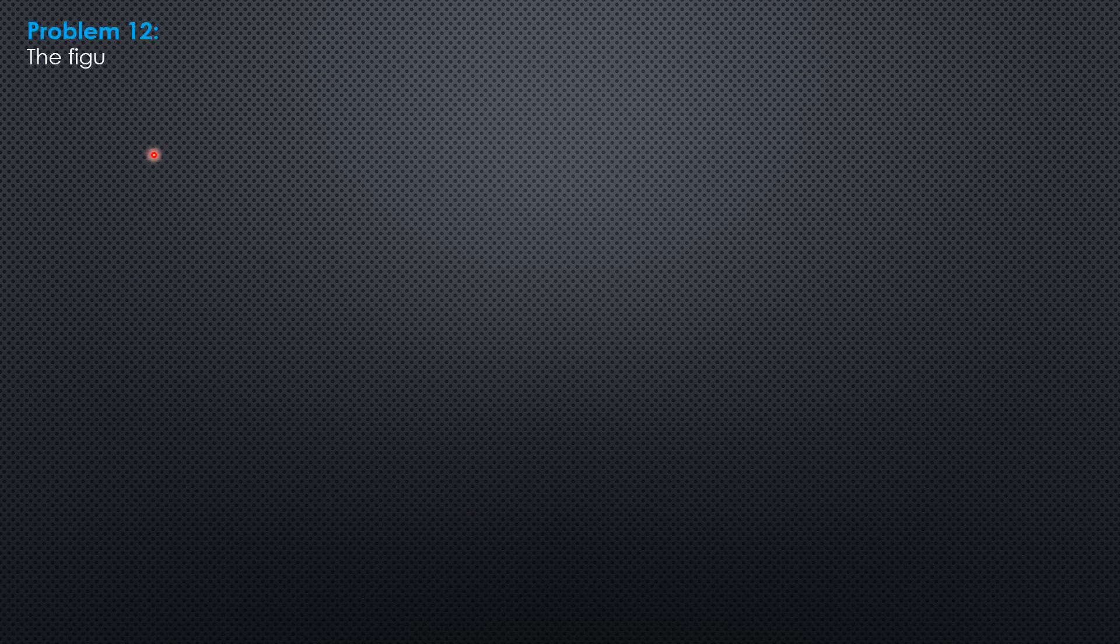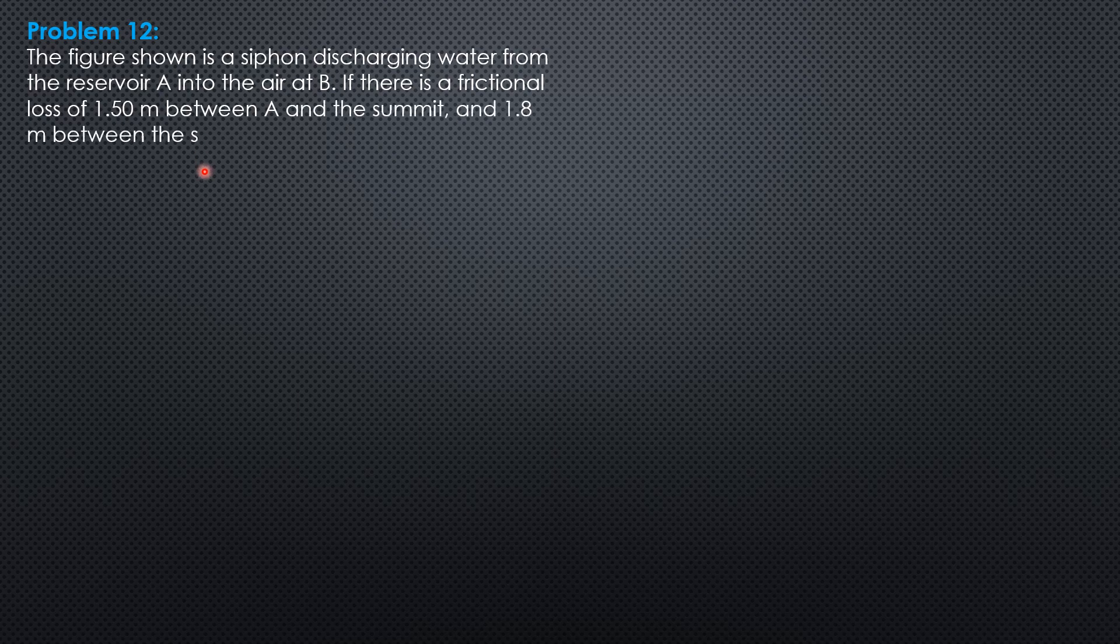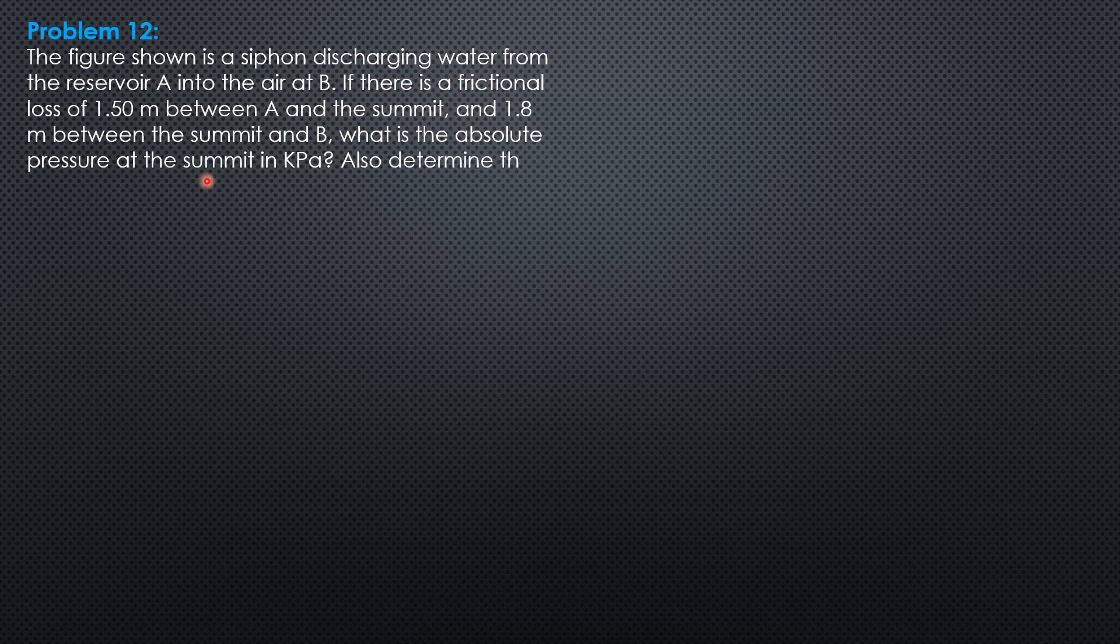Problem 12. The figure shown is a siphon discharging water from the reservoir A into the air at B. If there is a frictional loss of 1.5 meters between A and the summit and 1.8 meters between the summit and B, what is the absolute pressure at the summit in kilopascals?